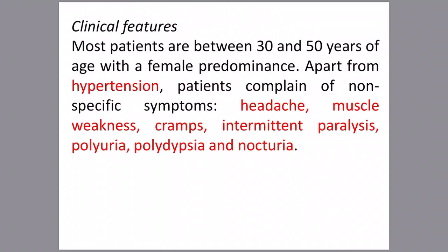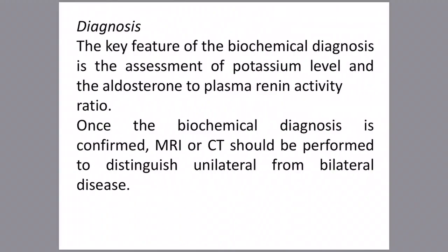Clinical features of Conn's syndrome: most patients are between 30 and 50 years of age with a female predominance. The hallmark presentation is hypertension, in addition to non-specific symptoms like headache, muscle weakness, cramps, intermittent paralysis, polyuria, polydipsia, and nocturia. These symptoms are related directly to hypernatremia and hypokalemia.